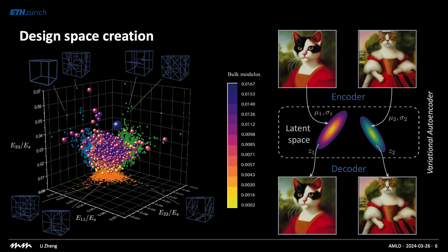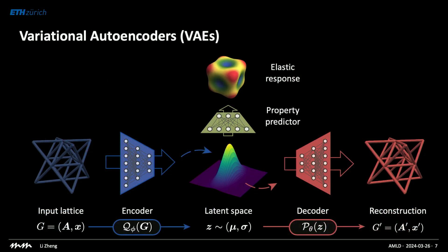This is where the machine learning model comes into play. We use a type of generative model called a variational autoencoder. The most remarkable aspect of these generative models is their ability to produce novel, imaginative, yet realistic outputs simply by learning from the underlying structure of the data itself. The encoder brings down the high-dimensional input to a low-dimensional continuous latent space, while the decoder does the opposite — going from the latent space back to the reconstructed structure. We also include a property predictor that maps from the latent space to the property we want to investigate.